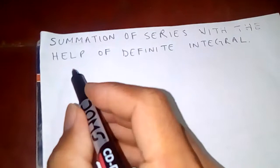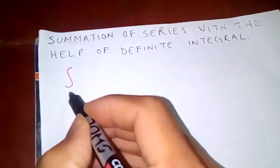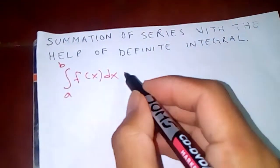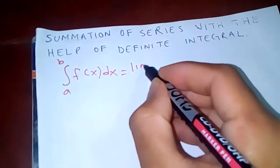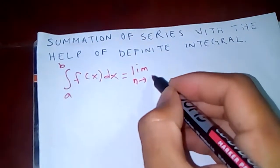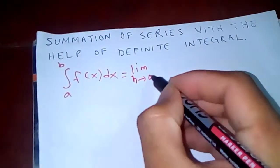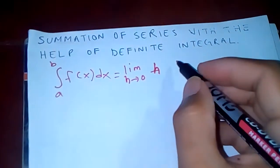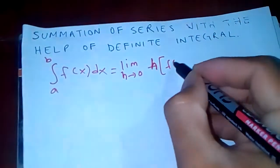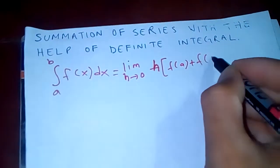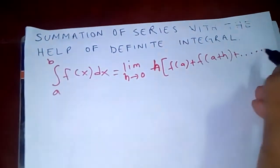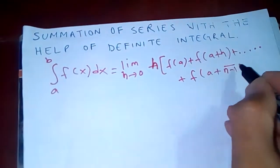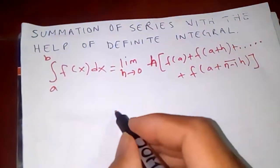We know that the integral from a to b of f(x) dx is nothing but the limit as h tends to 0 of h times [f(a) + f(a+h) + ... + f(a+(n−1)h)].